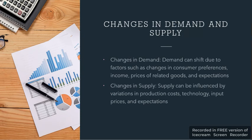For example, consider a child whose father has only 1000 rupees. With 1000 rupees, the child can buy a limited number of items. But if the father's income increases to 2000 rupees, the child can buy more — demand increases because income has increased. Another factor is the price of related goods.